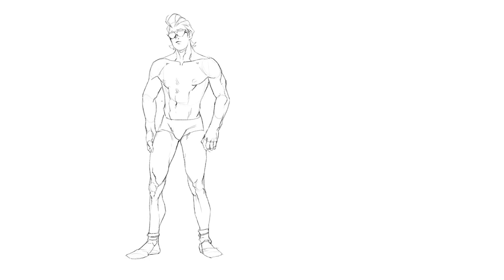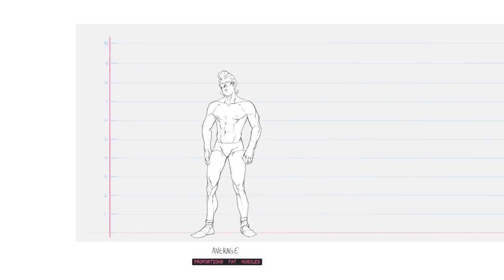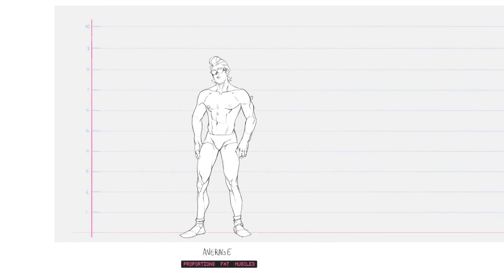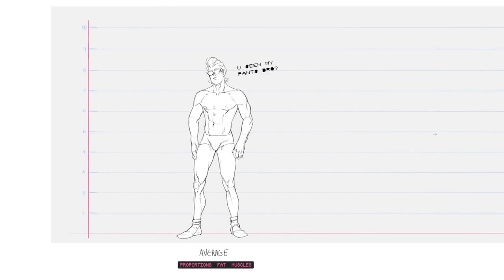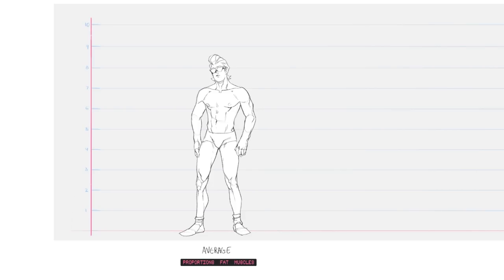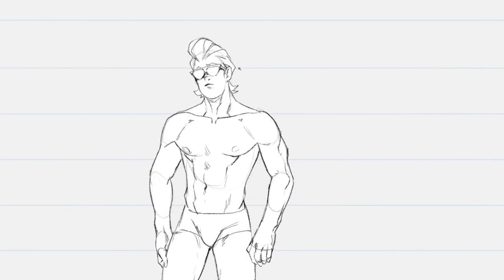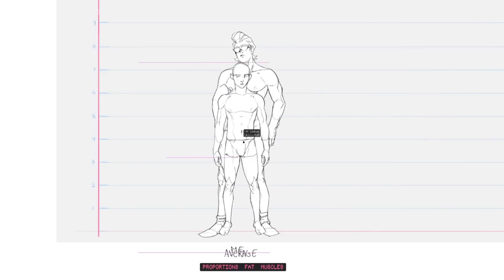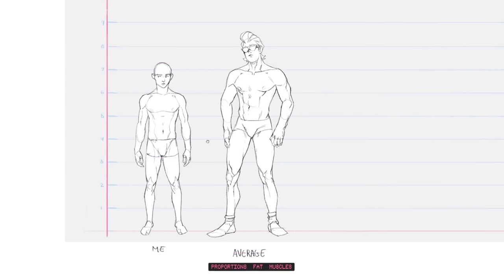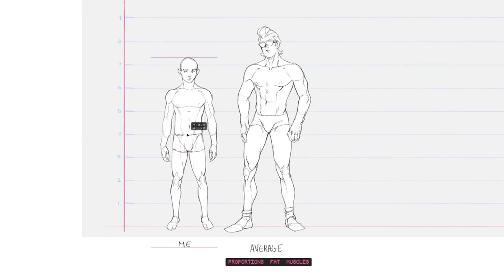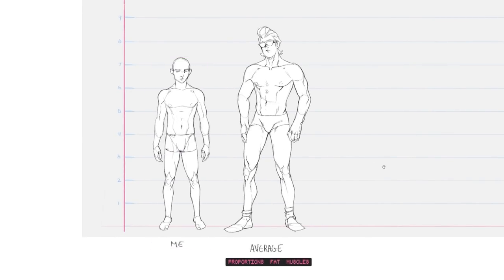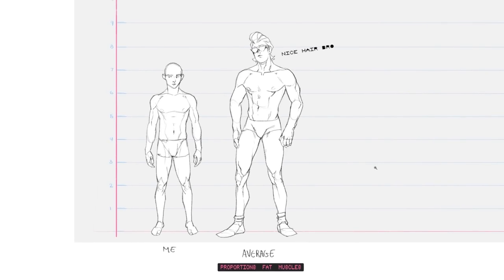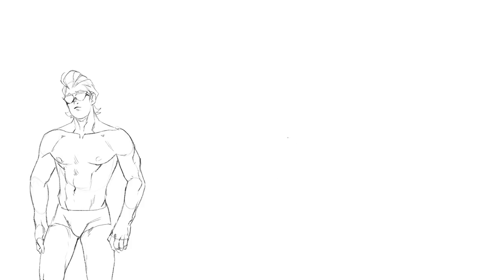I'm already done with the base character. This Chad here is going to be the average body that I'll base all the others on. Obviously, it's not average by real life standards — real life isn't as aesthetic. Here's me right here next to him; those are my actual proportions, more or less. I look like a kid next to Chad. It's my art though, and I have the power to make improvements, so that's why my average dude looks that much better.